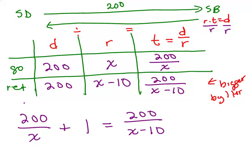So this is our equation. So just keep in mind what this stands for is the time going. And this is the time returning. And the time returning was a bigger number. So you take the time going, add an hour, you get the time returning. And this is the equation that we're going to have to solve. So that's the next step. We're going to now solve that equation.